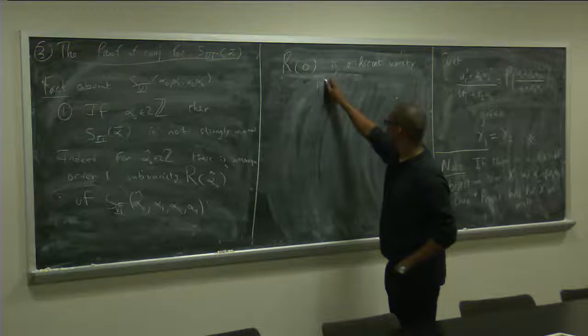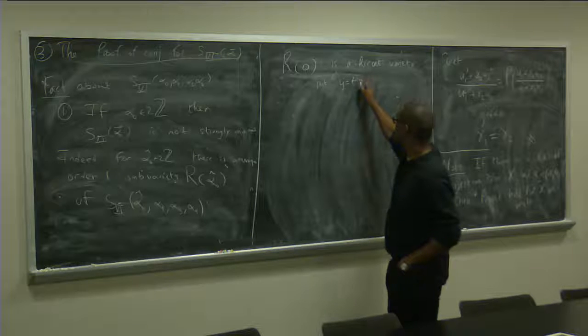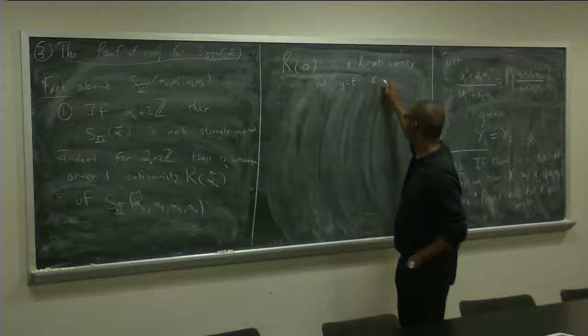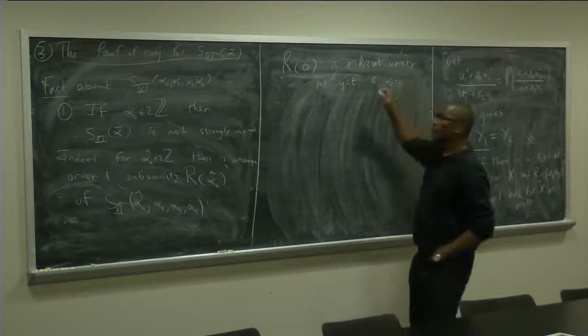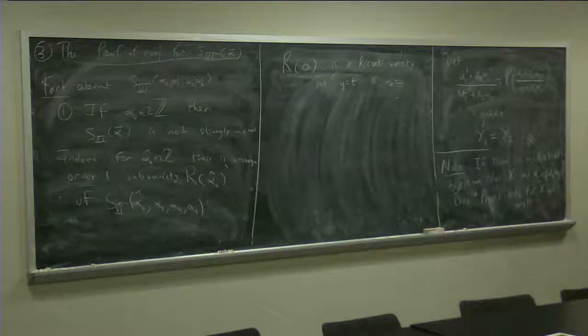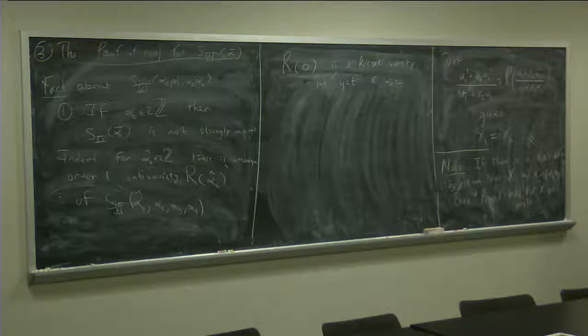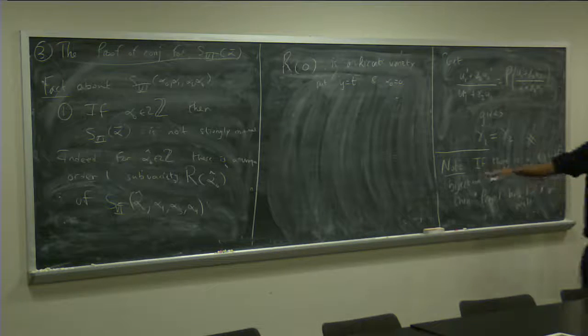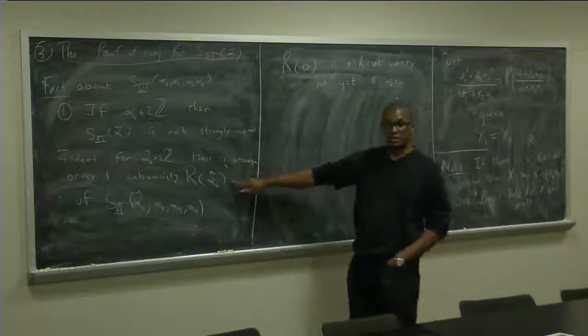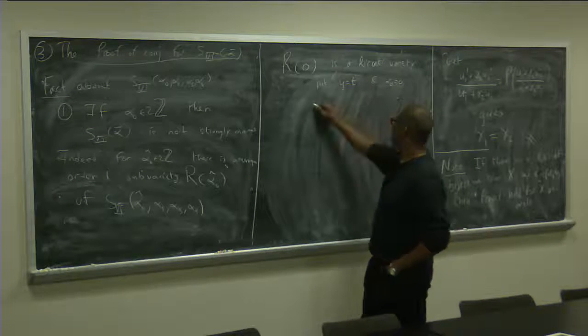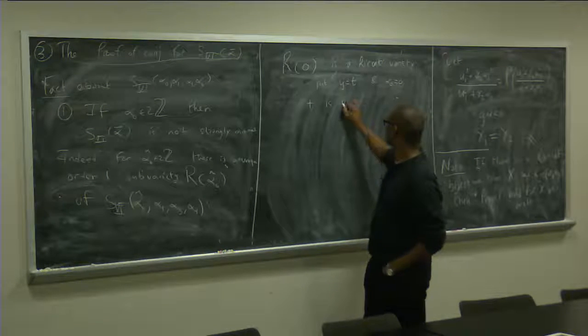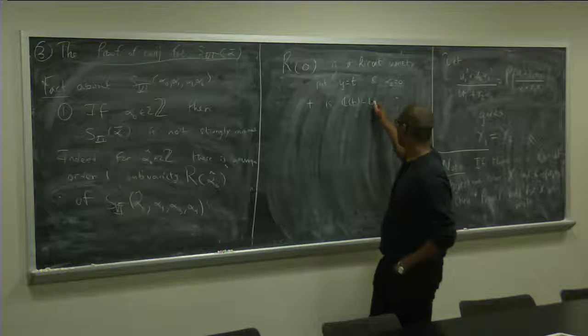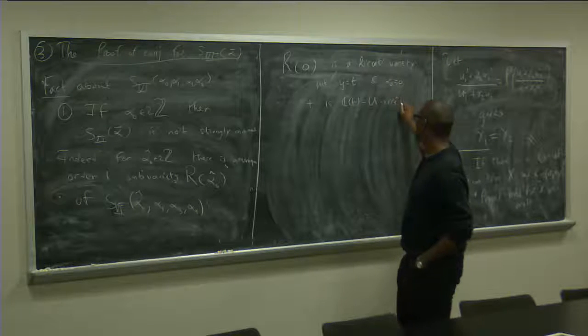So, that we talked about before. So, you put Y equals T and alpha node equals 0 there. And if you remember, we wrote down the Riccati variety earlier on. So, R0 is a Riccati variety, and all the others,